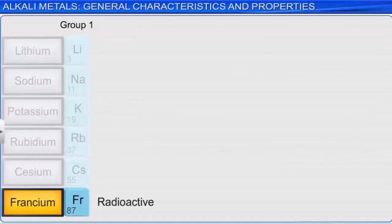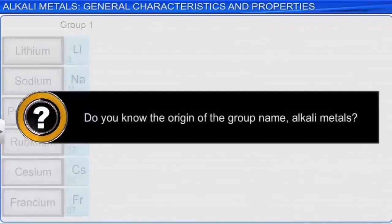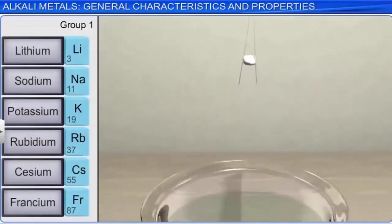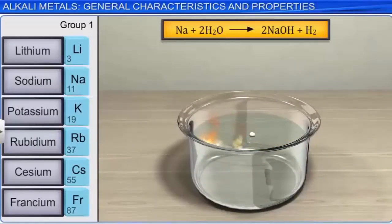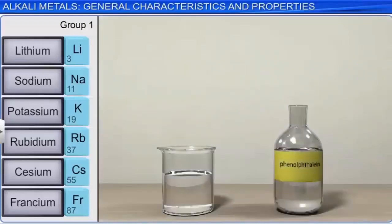The group name 'alkali metals' originates from the fact that when group 1 metals react with water, they produce hydroxide ions. Hydroxide ions in water produce basic or alkaline solutions. In the presence of phenolphthalein, an indicator, the solution will turn pink as the hydroxide ions formed react with the phenolphthalein.